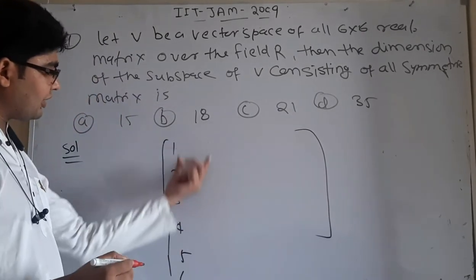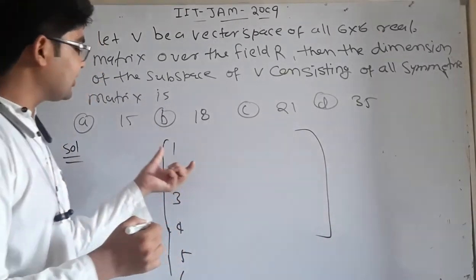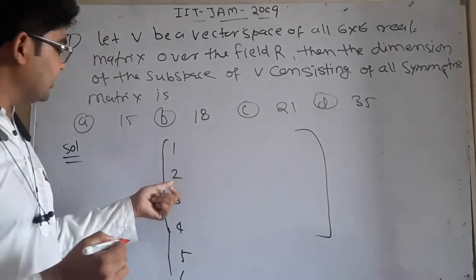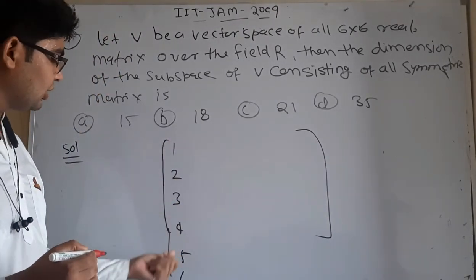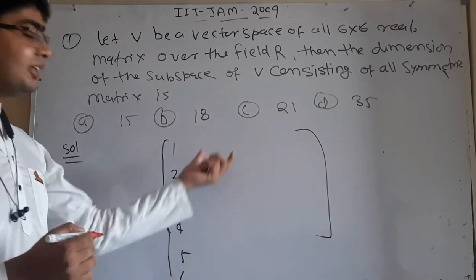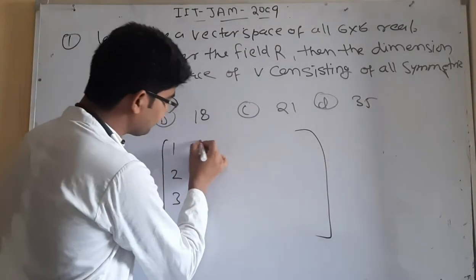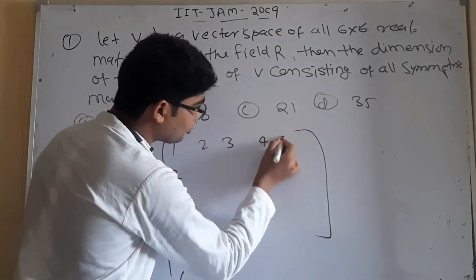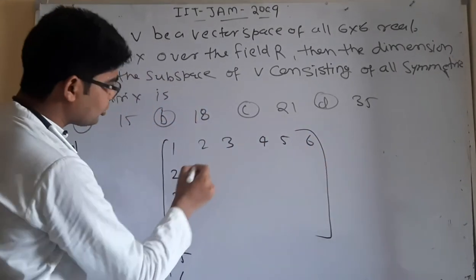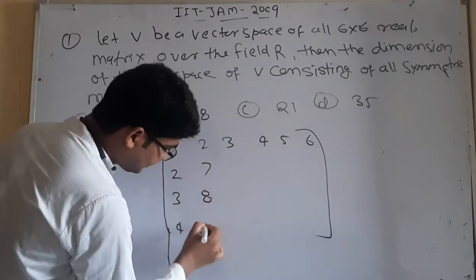If you want to make a matrix, this is the first one, this is the second one. This number 4, 5, 6. The same thing: 1, 2, 3, 4, 5, 6, 7, 8, 9, 10.